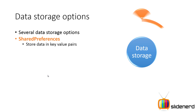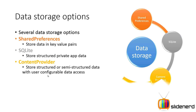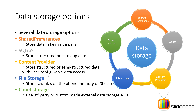The different data storage options available to you are: one, shared preferences — store data in key-value pairs; SQLite databases, where you can store structured data; content providers, where you can store structured or semi-structured data with user-configurable data access, meaning you can control what part of the database can be seen by external applications and what part is private to your application. Then there's file storage, where you can store files on your memory card or SD card. And finally, cloud storage, where you can use custom APIs like parse.com, Dropbox, Google Drive, or SkyDrive.